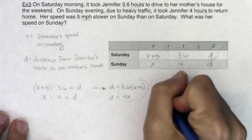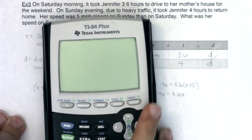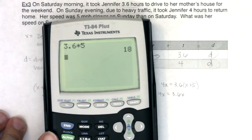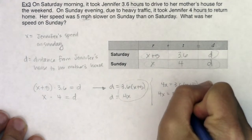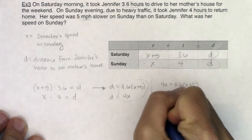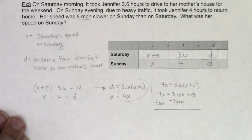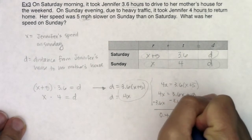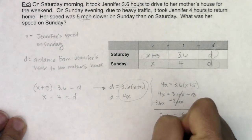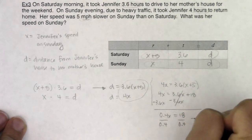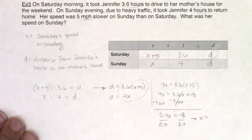Now let's distribute the right side: 4x = 3.6x + 18, since 3.6 times 5 equals 18. Subtracting 3.6x from both sides gives 0.4x = 18. Dividing both sides by 0.4, we get x = 45.